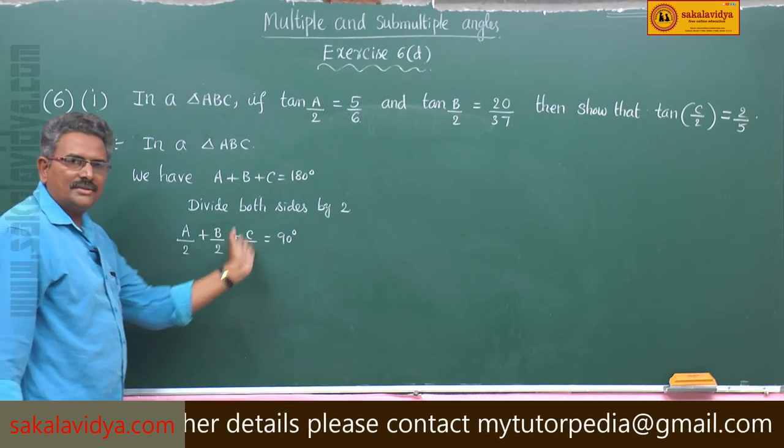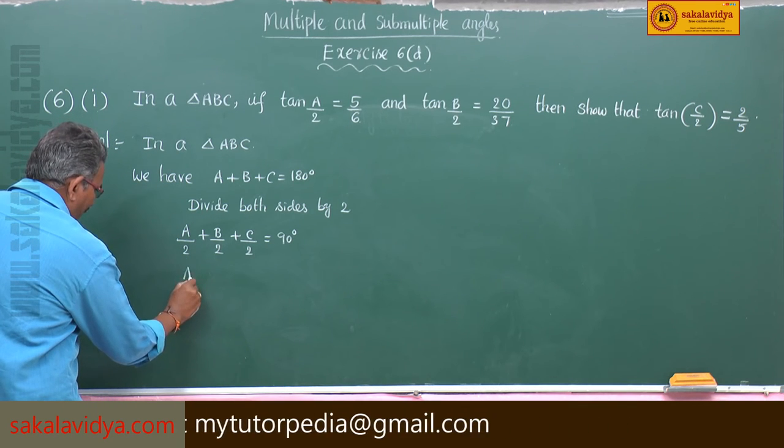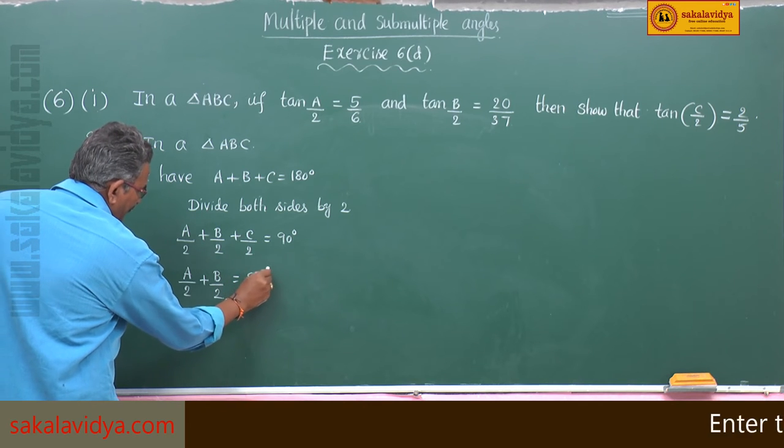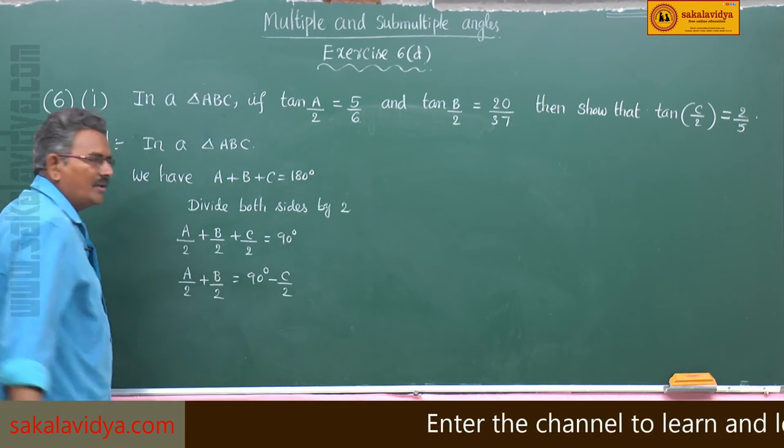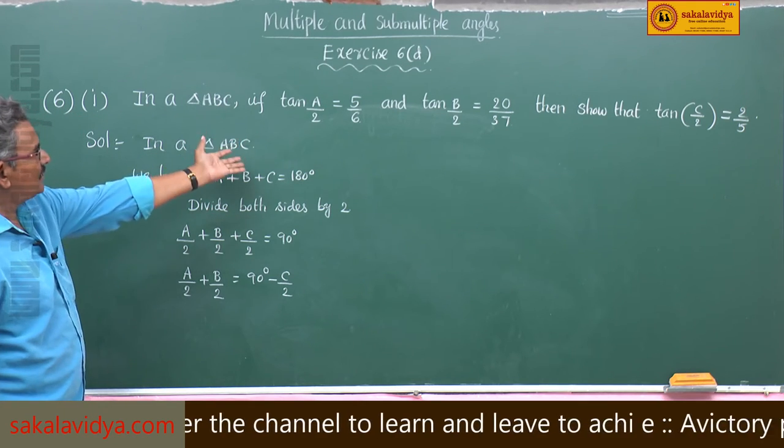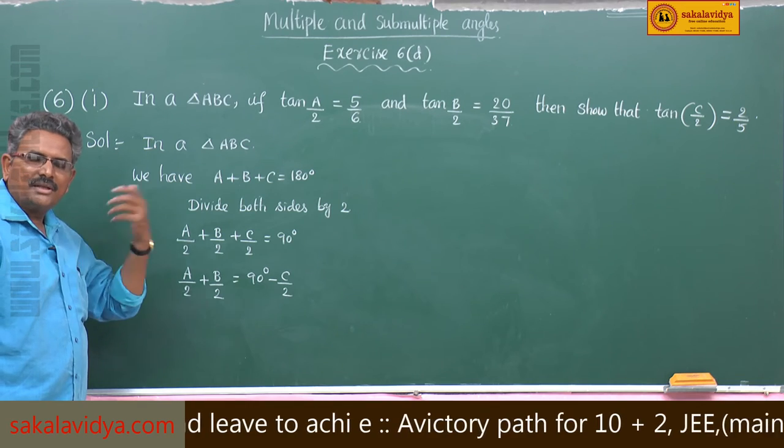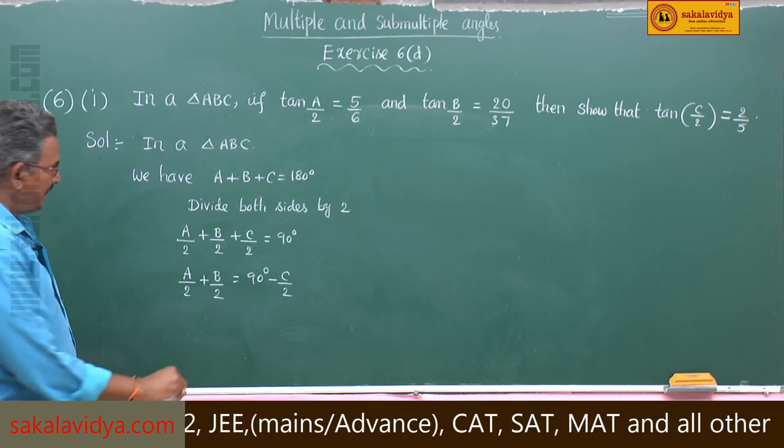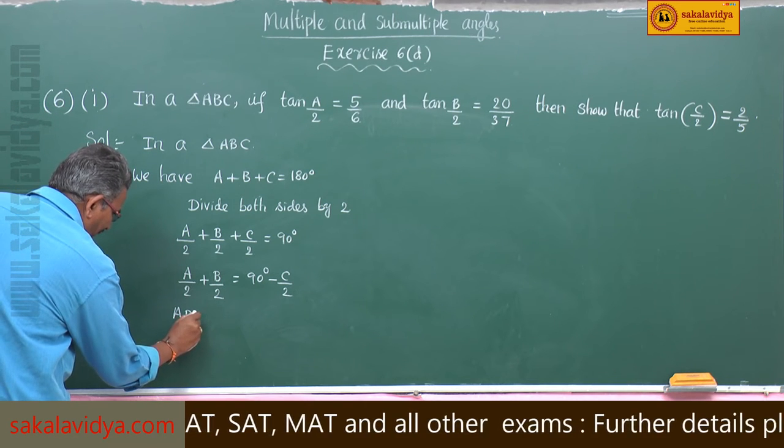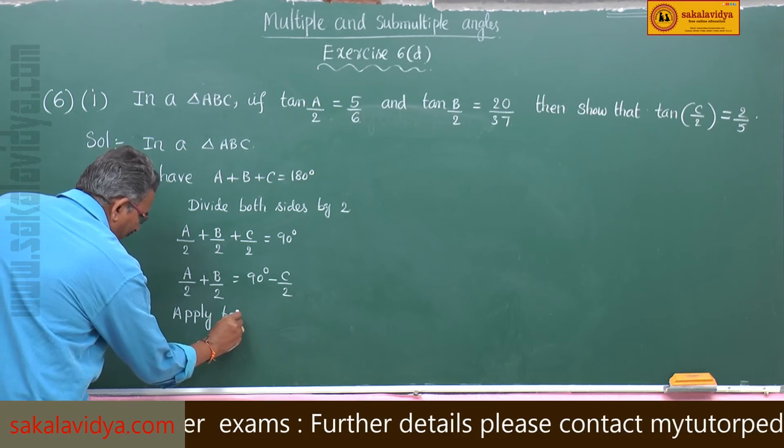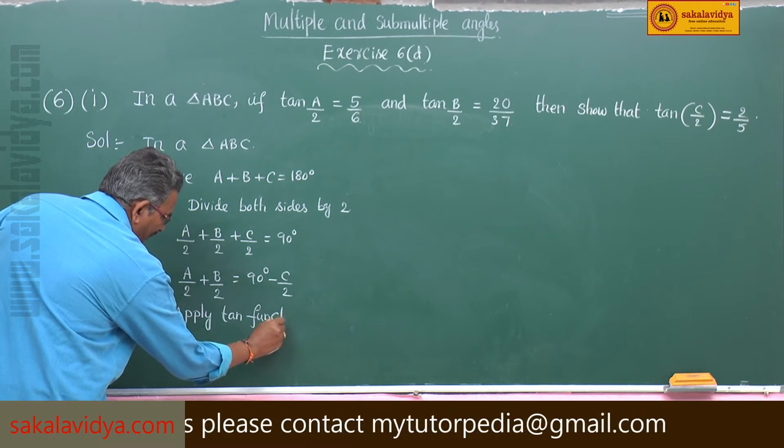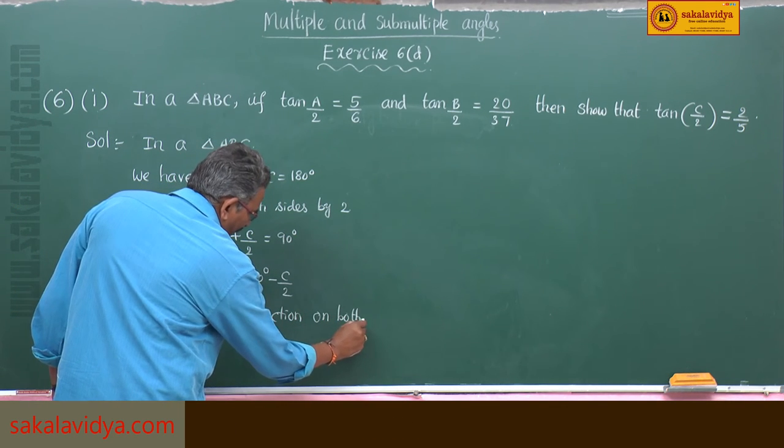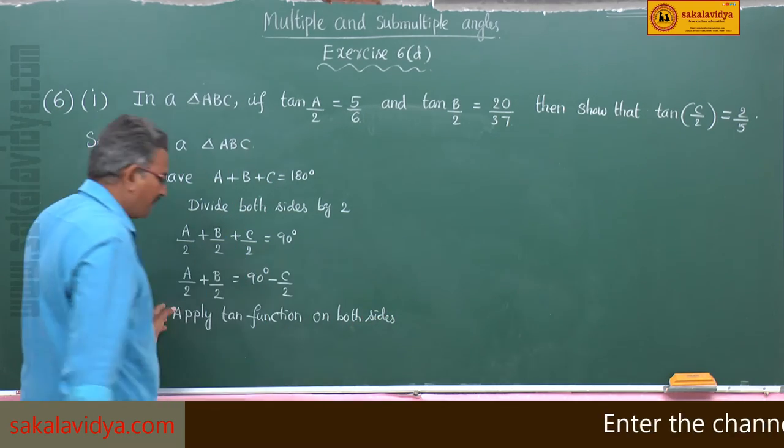Take C by 2 to the other side. So A by 2 plus B by 2 equals to 90 degrees minus C by 2. In order to get the relation among tan A by 2, tan B by 2, tan C by 2, apply tan function on both sides.